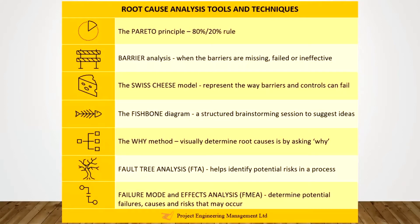The fishbone diagram is a good one when we might run out of inspiration or ideas using things like brainstorming and we want more ideas created. The why diagram is a really popular visual method used alongside brainstorming and the fishbone diagram, and it determines the root cause by asking why. Fault tree analysis is a technique used for reliability and safety quite often, and it helps identify potential risks in processes.